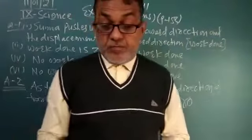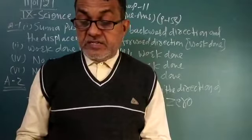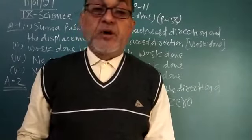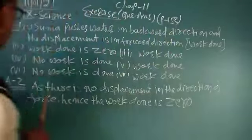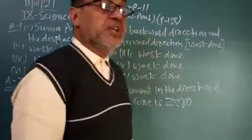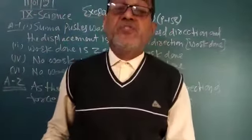Question number two: An object thrown at a certain angle on the ground. What is the work done by the force of gravity on the object? We know that as there is no displacement in the direction of the force...